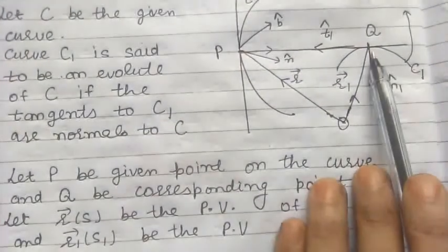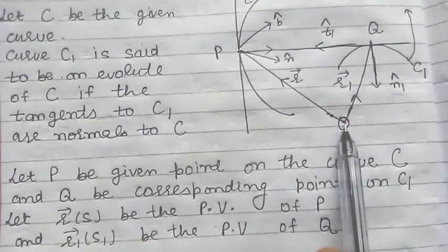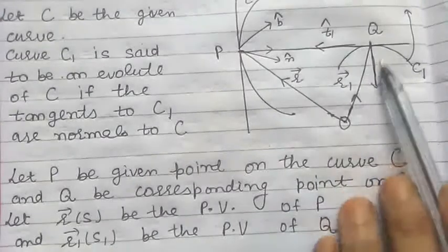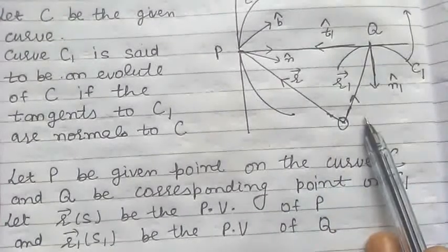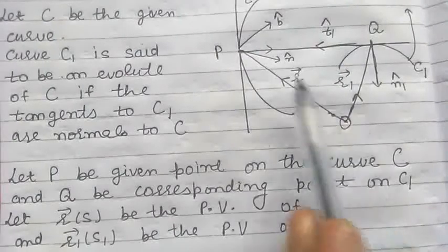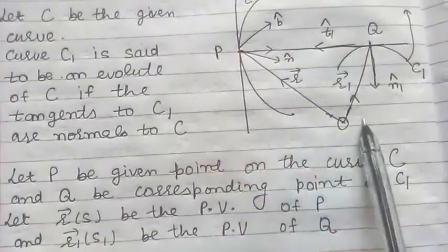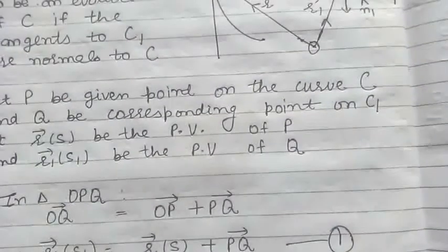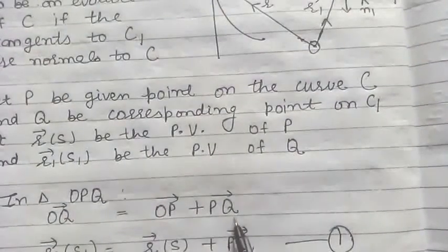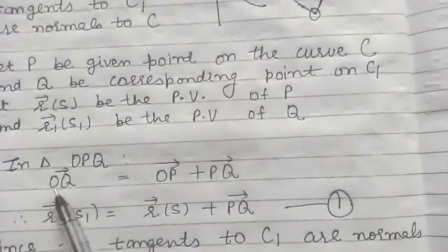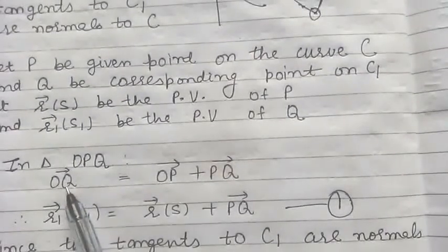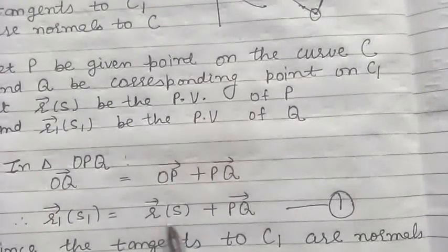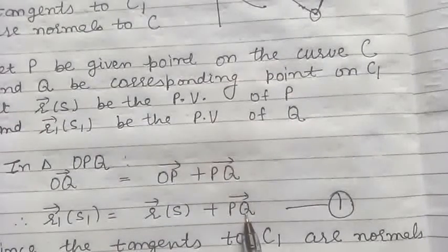This is the point Q on the curve C1. Let us take the position vector of point P, that is the vector R, and the position vector of point Q, that is the vector R1. Now we can apply the triangle of vectors in the triangle OPQ. So by the triangle of vectors we have vector OQ is equal to vector OP plus vector PQ. The position vector of point Q is vector R1 and the position vector of point P is vector R. Now we are to find the value of vector PQ.